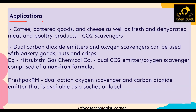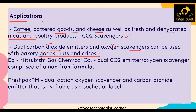The applications of carbon dioxide emitters include coffee, bakery goods, cheese, and fresh and dehydrated meat and poultry products. Dual carbon dioxide emitters and oxygen scavengers — meaning addition of carbon dioxide and removal of oxygen — are used in bakery goods, nuts, and crisps. One company, Mitsubishi Gas Chemicals, has developed a dual carbon dioxide emitter and oxygen scavenger comprising a non-iron formula. The iron-based and non-iron-based formulas used for oxygen scavengers were discussed in part one of this series.